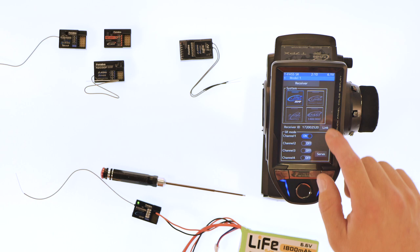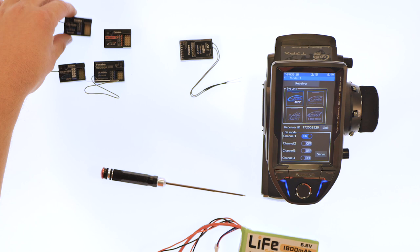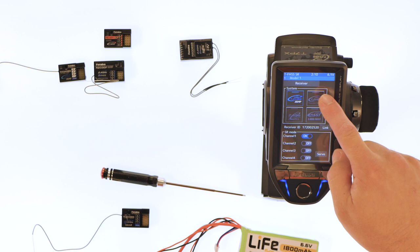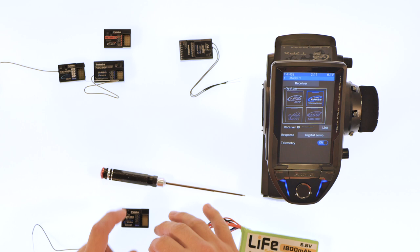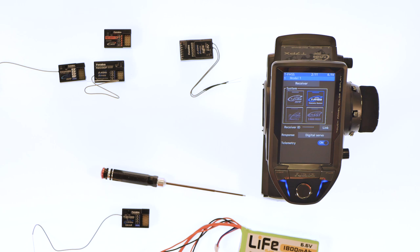So let's go ahead and do a different receiver here. Let's go ahead and pick the R324 SBS receiver. It's a telemetry receiver. So go back to telemetry. The way you link telemetry receivers are all the same throughout the different variations of the receivers themselves.